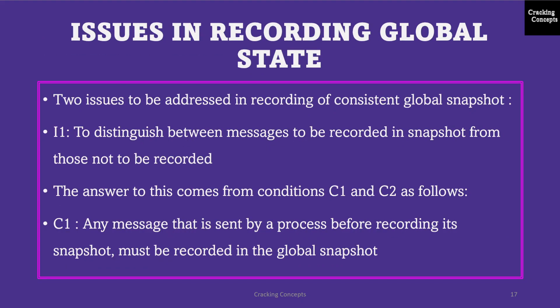The second problem is how to determine the instant when a process takes its snapshot. The answer comes from condition C2, which states that a process PJ must record its snapshot before processing a message MIJ that was sent by process PI after recording its own snapshot.